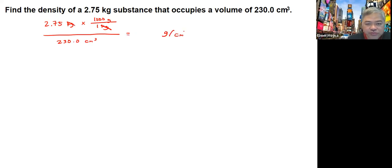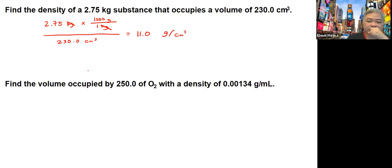So 2.75 times a thousand, that's 2,750, divided by 230. For three significant figures, you get around 11.0 grams per cubic centimeter.